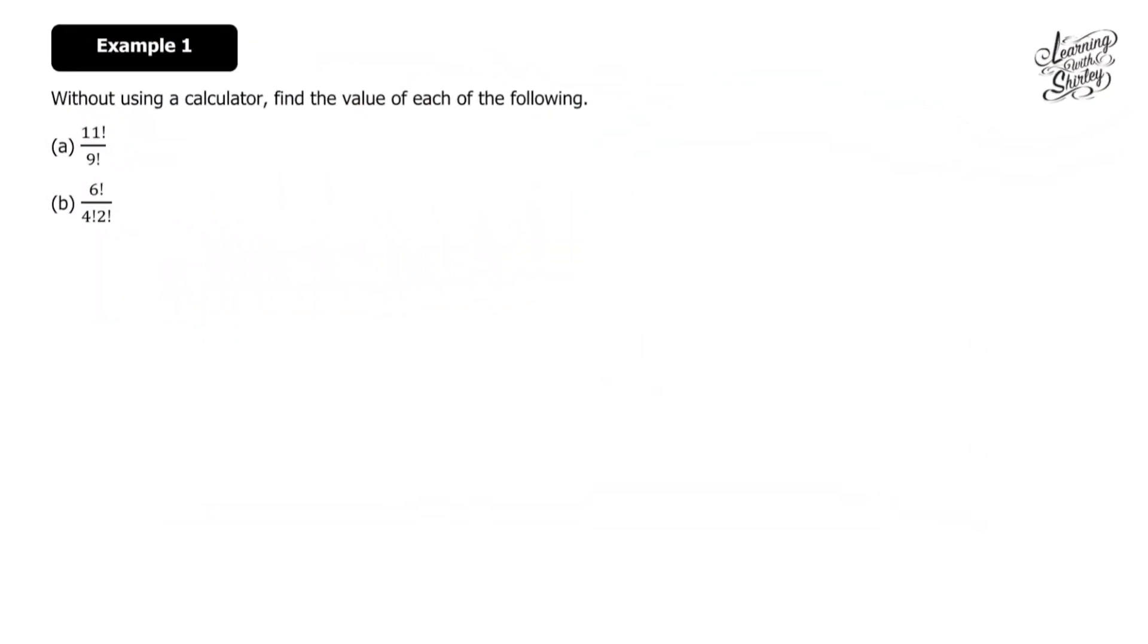Let's look at Example 1. Without using a calculator, find the value of each of the following. For part (a), 11!/9!. Let's solve this the fastest way: 11 × 10 × 9! – I stop here because the denominator is 9 factorial. We can cancel the 9! on top and bottom, and the answer is 110.